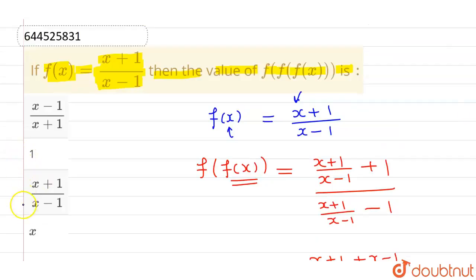So the correct option is option 3 which is x plus 1 divided by x minus 1 and rest all options are incorrect. I hope you understood.